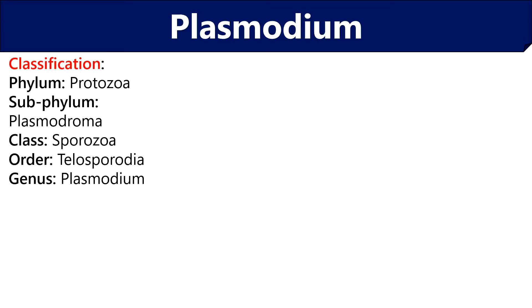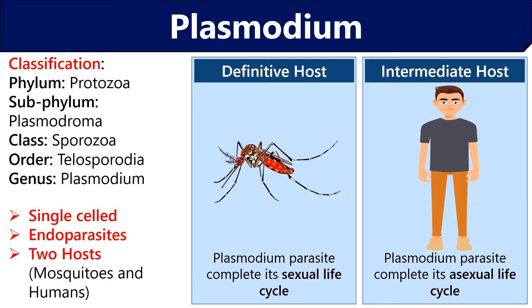Now we will talk about Plasmodium. This is the classification of the genus Plasmodium. Plasmodium species are unicellular and behave as endoparasites because they reside within the host cell. Plasmodium species generally require two hosts to complete their life cycle. The mosquito is the definitive or primary host where it undergoes the sexual life cycle, whereas humans and other vertebrates are the intermediate or secondary host where it completes its asexual life cycle. Therefore, Plasmodium species have a digenetic life cycle.